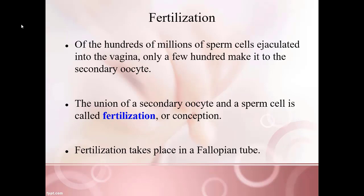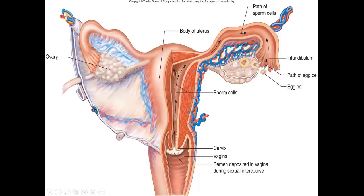The union of the secondary oocyte and the sperm cell is fertilization, also known as conception. Those terms are interchangeable. This is the beginning of life, and fertilization takes place in the fallopian tube — not in the uterus, but in the fallopian tube.